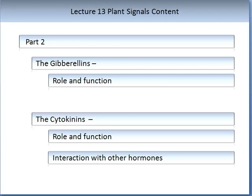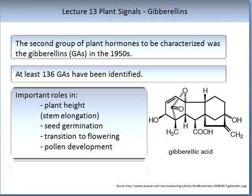After auxins, gibberellins were the second group of plant hormones to be characterized, and this occurred in the 1950s. The illustration on your slide is the chemical composition of gibberellic acid. There are at least 136 gibberellins identified to date. They have important roles in plant height and stem elongation, seed germination, the transition to flowering, and pollen development.